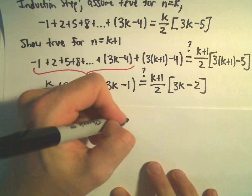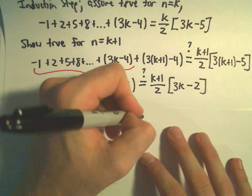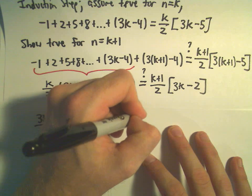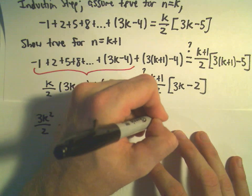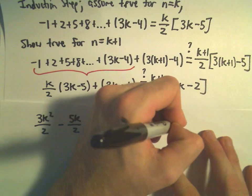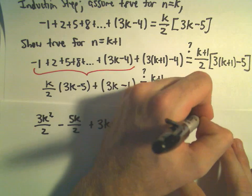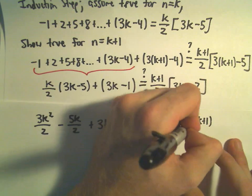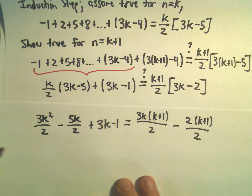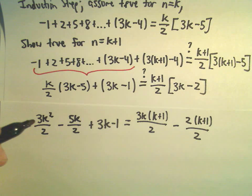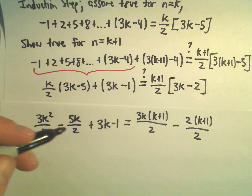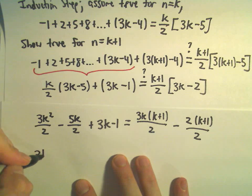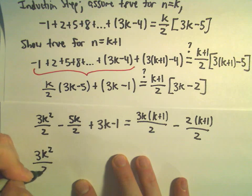Now, on the right side, if we multiply things out, it looks like we're going to have 3k times k plus 1 over 2 minus 2 times the quantity k plus 1 over 2. And we could get some common denominators. So, I've got 3k squared over 2.